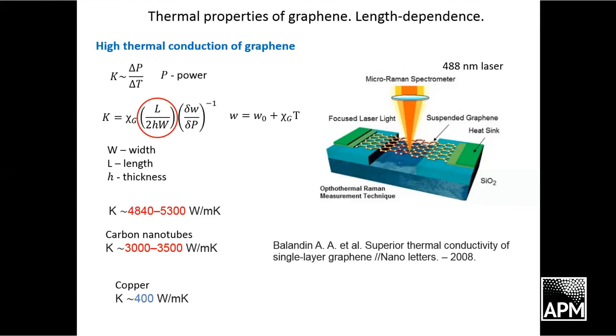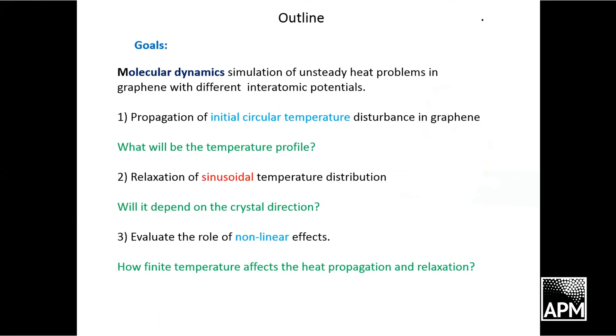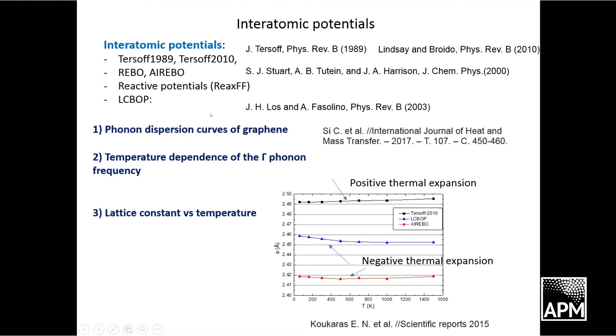This suggests that heat propagation mechanism is no longer diffusive, but like a mixed transition from ballistic to diffusive. My goals of the study are to do molecular dynamics simulation of unsteady problems in graphene with different interatomic potentials. I'm going to show you how initial circular temperature disturbance will propagate, then show how sinusoidal temperature distribution will relax and how it depends on crystal direction, and mention about the role of background temperature.